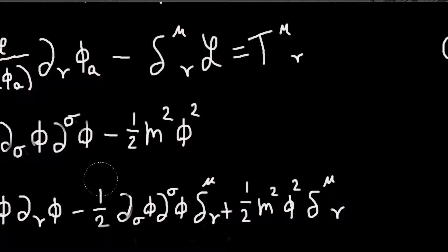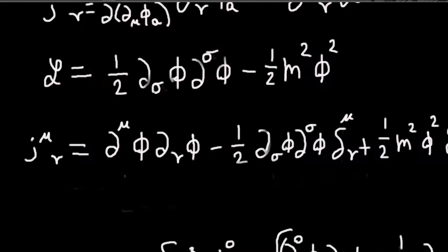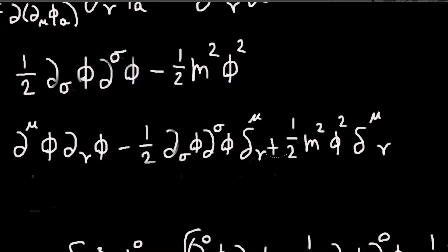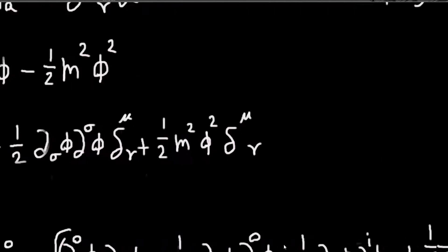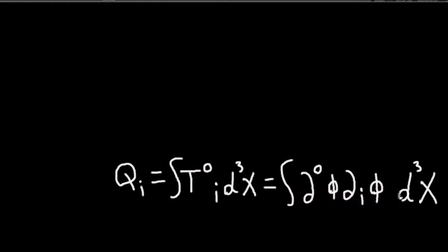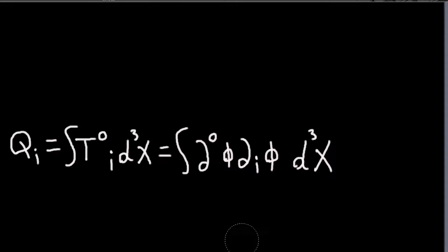And that, because of these delta functions, this is very easy to do. Both of these terms go to zero. And we're just left with this. So it's j zero i will just be d zero phi di phi. And so our charge is just the interval of that overall space.